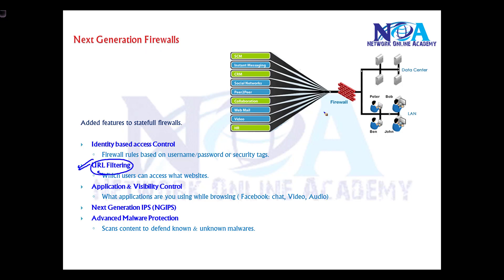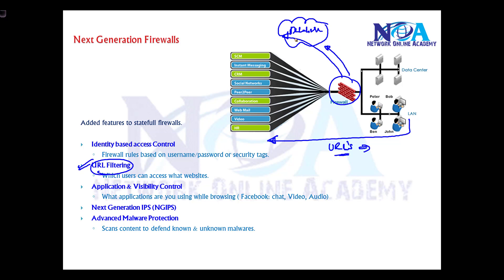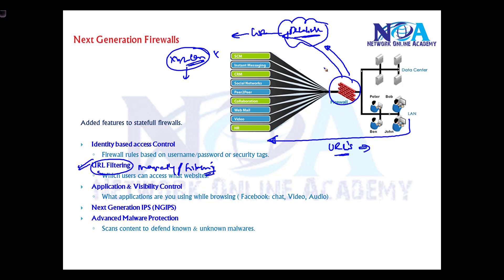Next generation firewalls support additional options like URL filtering, where traffic going from LAN to the internet can be filtered based on specific URLs. Some firewalls contact a cloud or network database with a predefined list of URLs rated by reputation — for example, a known malicious website will be automatically blocked. This can be done manually or dynamically based on vendor-defined URL categories, similar to how antivirus programs stop vulnerable files.